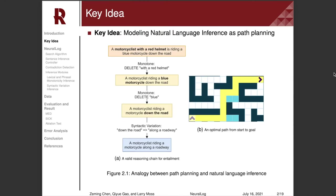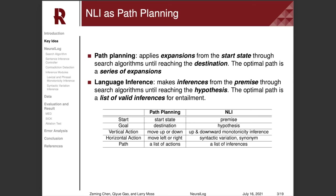The key idea of our proposed system is modeling the natural language inference task as a path-planning problem. Here on the right is a path-planning in a grid map, where a model needs to identify an optimal path connecting a start point and a goal. On the left, we have a reasoning process for natural language inference, where a series of inference is conducted from the premise to the hypothesis. Normally, path-planning is done by applying different expansions from the start state through search algorithms until reaching the destination.